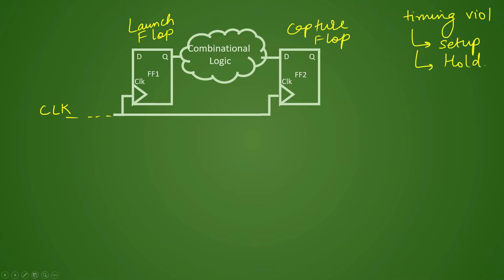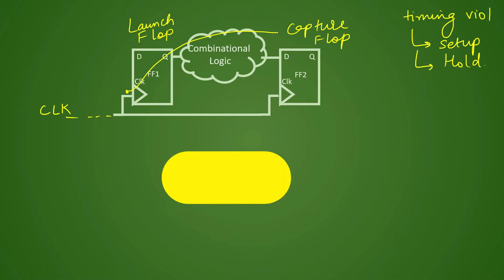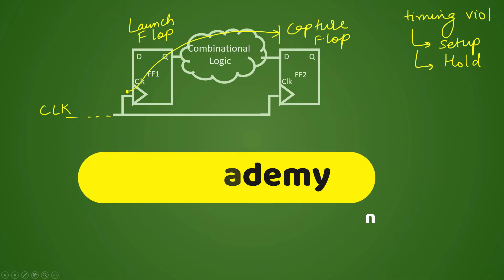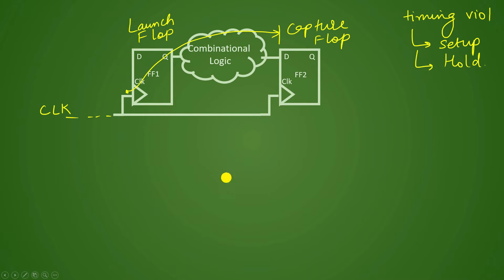In the setup timing violation, it is actually a maximum limit. That is, your data should not be too slow — it should not take too much time. Once it is launched from the clock pin, it should not take too much time before it reaches the data pin of the capture flop.